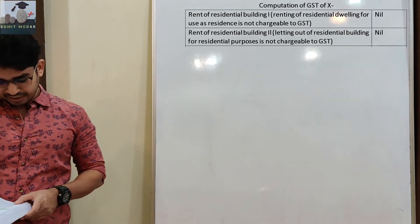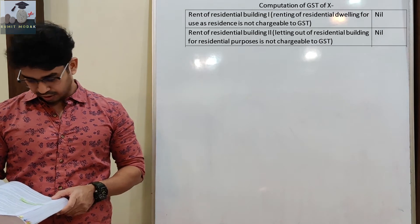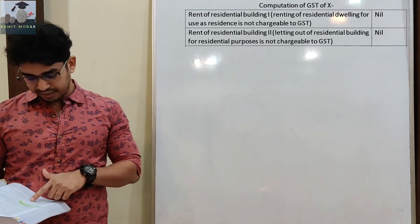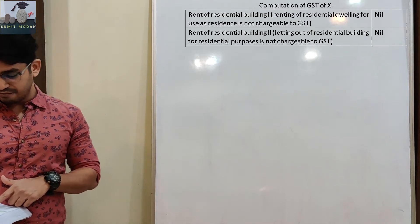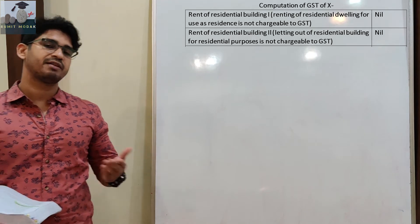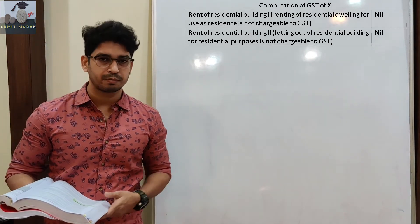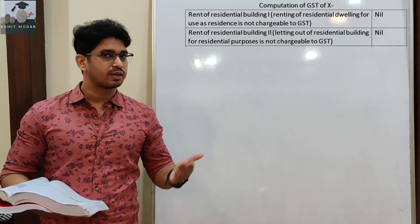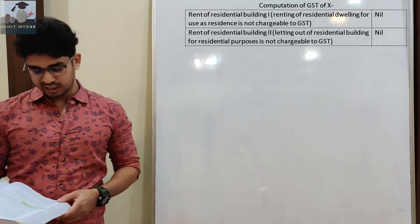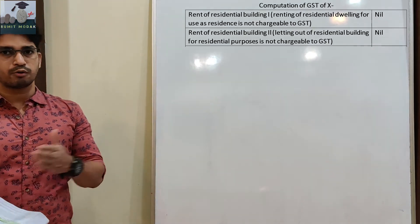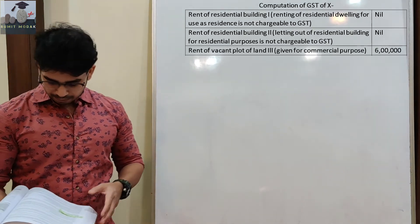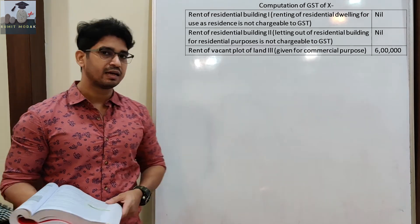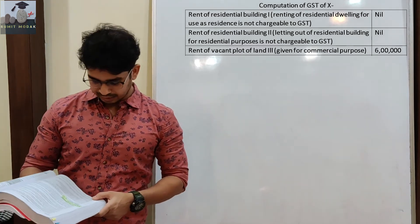Rent of vacant plot of land 3 - given on rent to a manufacturing company. This is for commercial purposes, not agricultural. So in this case GST will apply, and we will write Rs. 6 lakh in the outer taxable column. For properties where GST is not applicable, we write NIL.